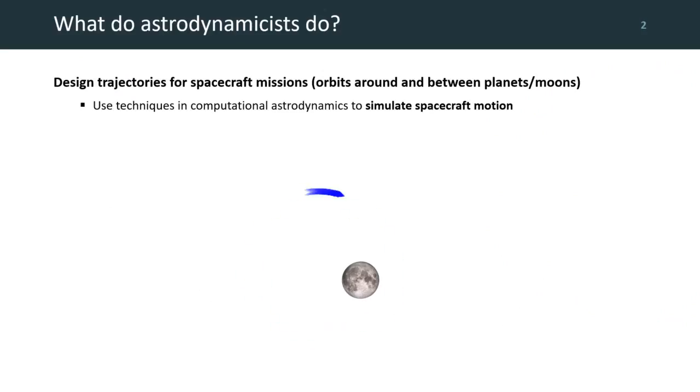But what exactly does an astrodynamicist do? Well, they're responsible for designing trajectories for spacecraft missions, for example, orbits around and between planets and moons. They do this by using techniques of computational astrodynamics to simulate spacecraft motion. They also analyze and optimize trajectories based on mission requirements, for example, landing on or perhaps crashing into the moon.